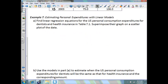Now on example 7 we need to find linear regression equations for the U.S. personal consumption expenditures for dentists and health insurance in table 7.1. We're going to superimpose their graphs on a scatterplot. So we need to find the equation for dentists and health insurance.